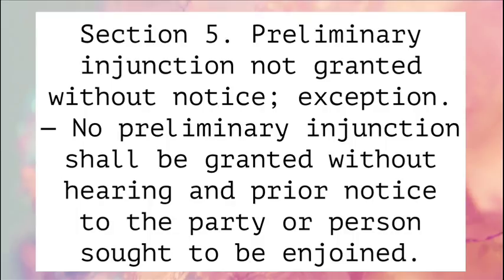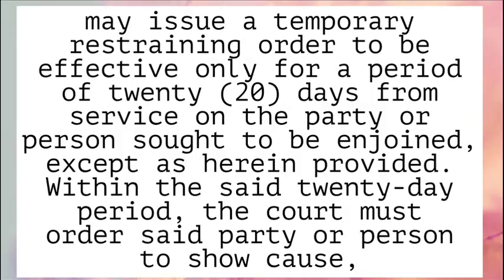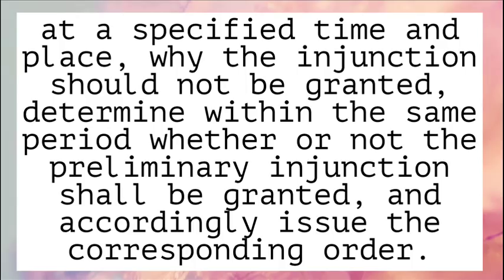Section 5. Preliminary Injunction Not Granted Without Notice; Exception. No preliminary injunction shall be granted without hearing and prior notice to the party or person sought to be enjoined. If it shall appear from facts shown by affidavits or by the verified application that great or irreparable injury would result to the applicant before the matter can be heard on notice, the court may issue a temporary restraining order to be effective only for a period of 20 days from service on the party or person sought to be enjoined. Within the said 20-day period, the court must order said party or person to show cause at a specified time and place why the injunction should not be granted, determine whether or not the preliminary injunction shall be granted, and accordingly issue the corresponding order.